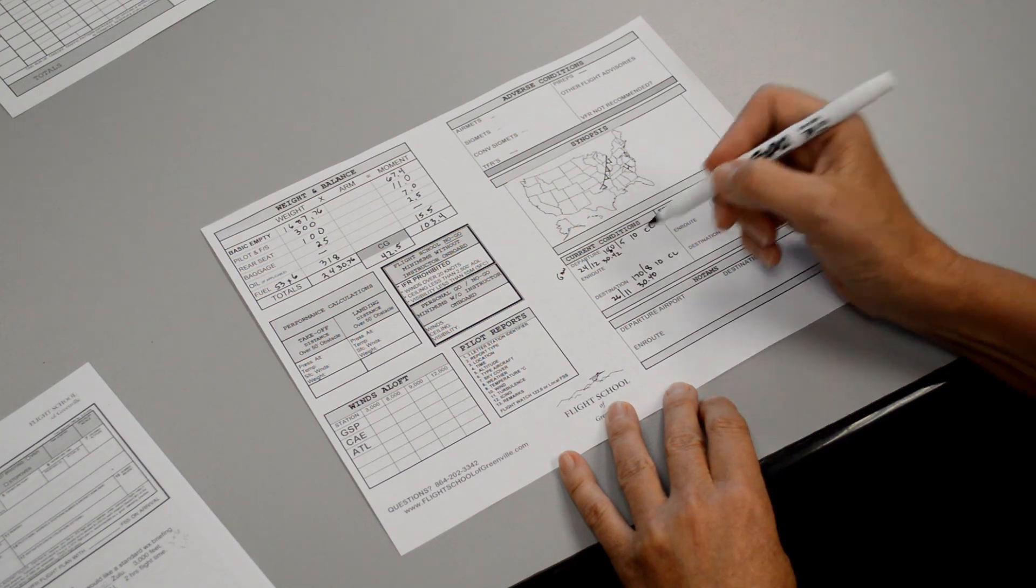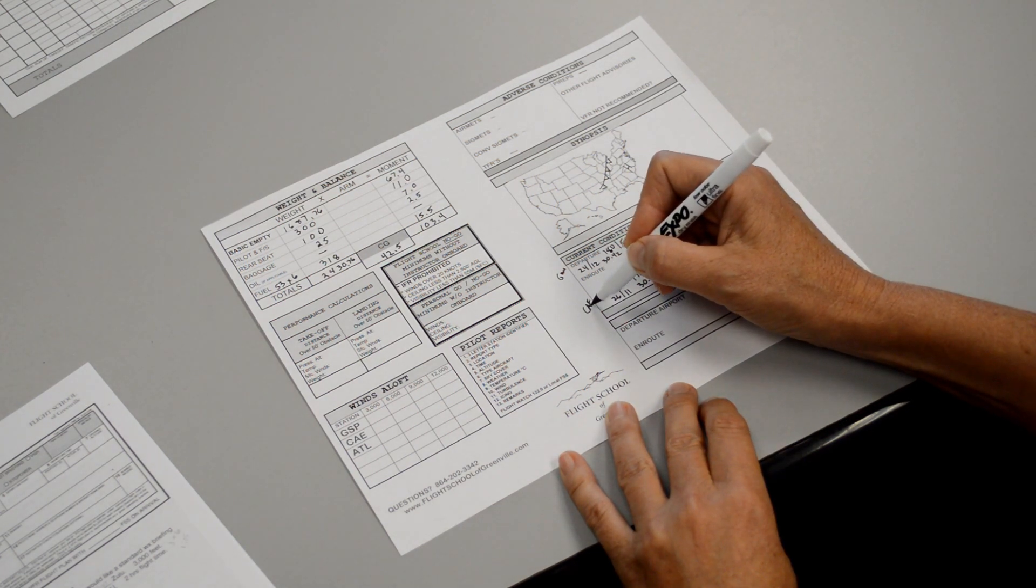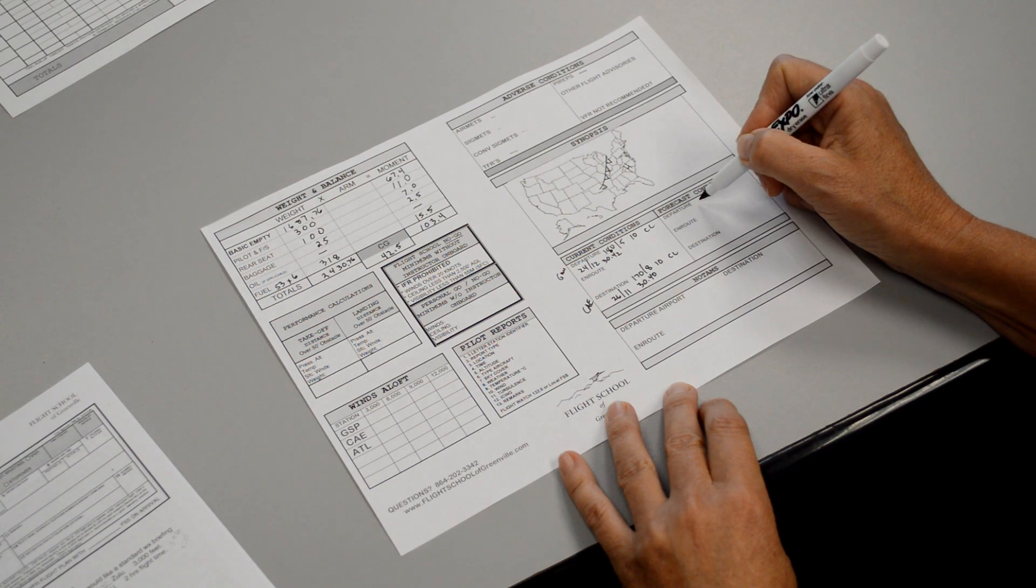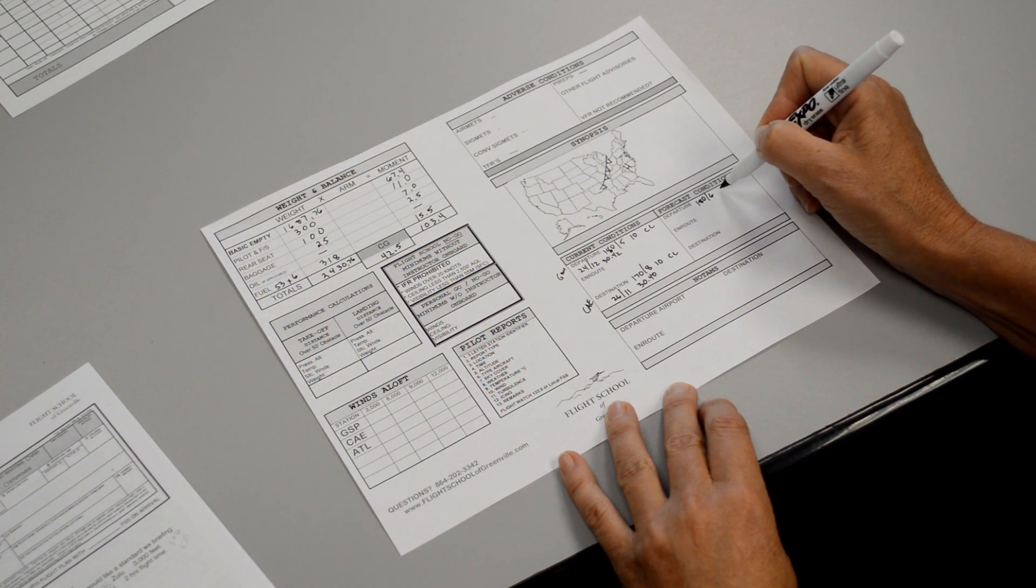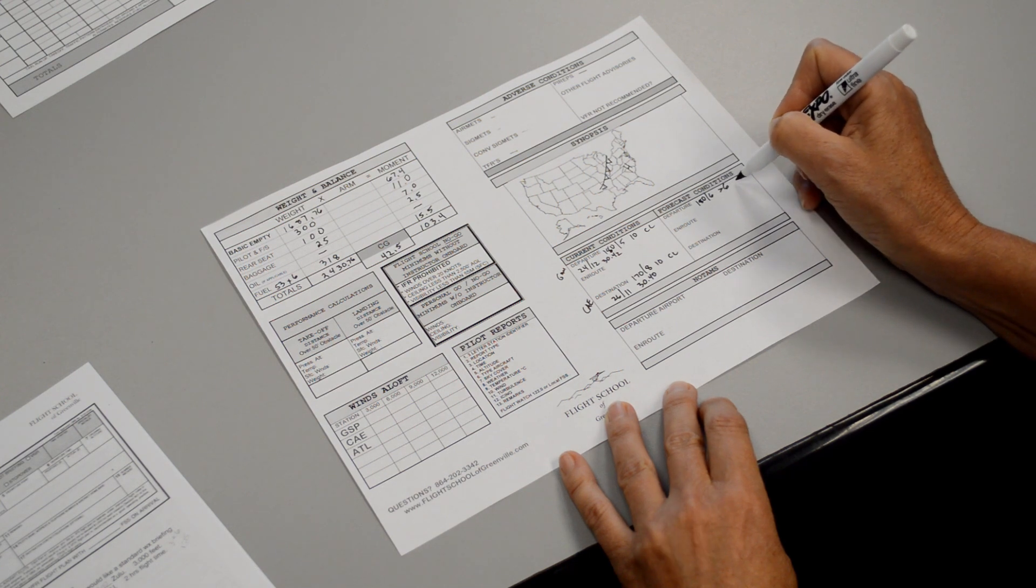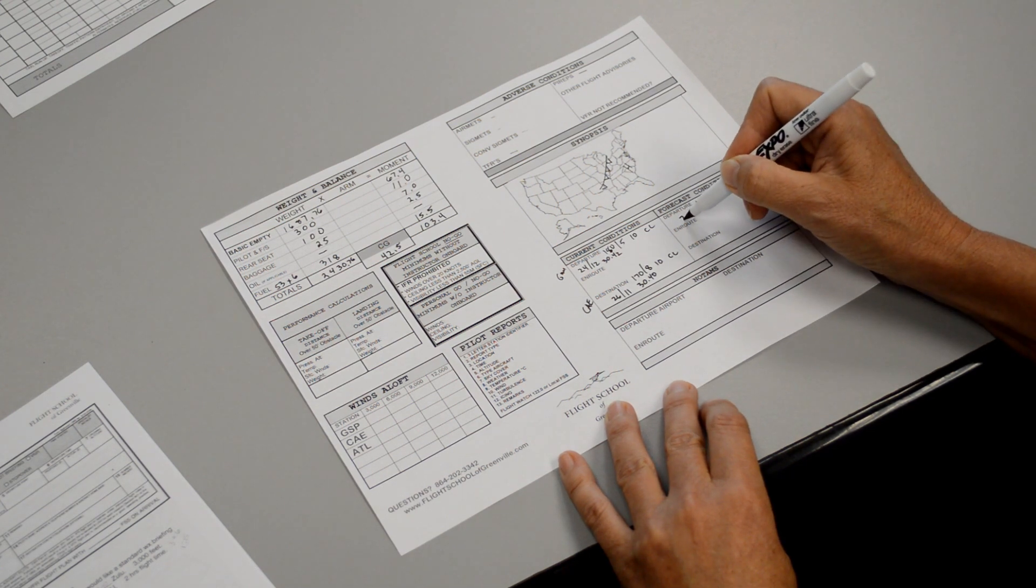For the forecasted conditions at Greenville downtown, the wind seems it's probably going to stay out of the south, 180 at 6. Visibility greater than 6. Skies clear. Temperature 28, dew point 10.